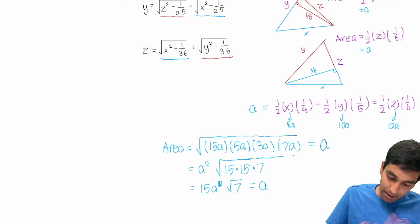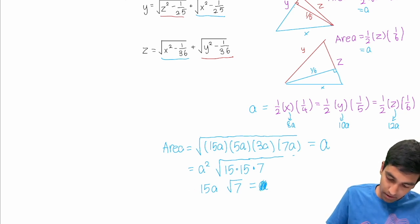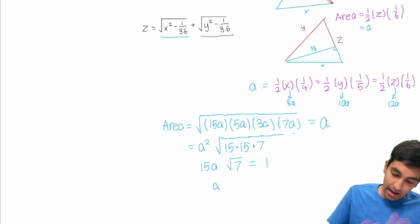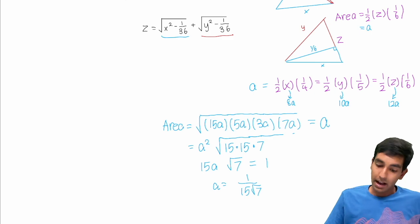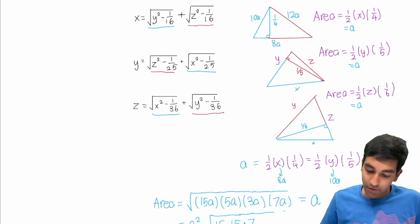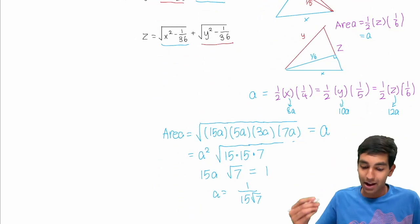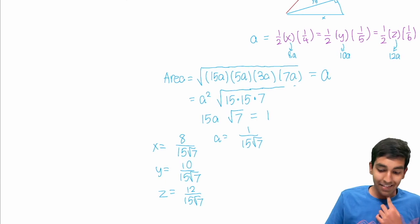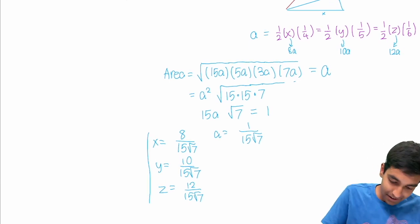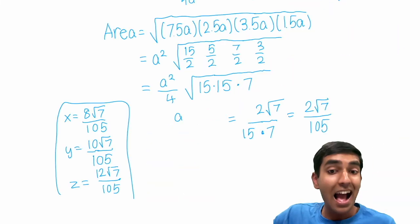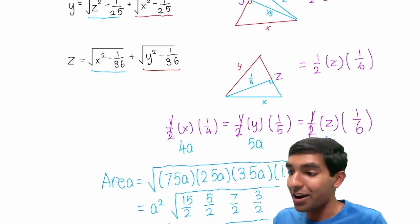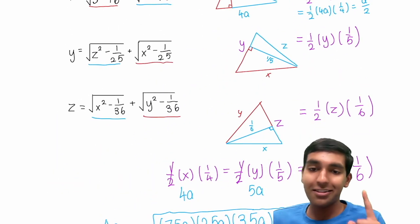Now all we have to do is multiply by 8, 10, and 12 to get x, y, and z. And these are our final answers. That's how you solve this monstrosity of equations with just simple geometry.